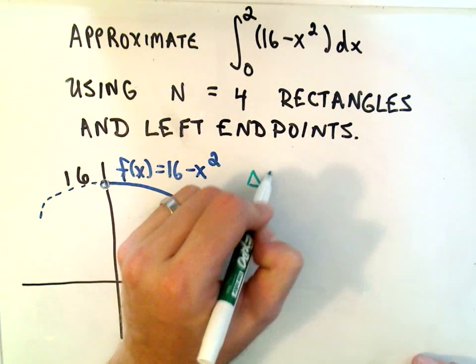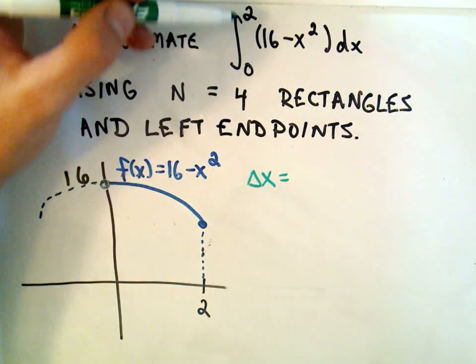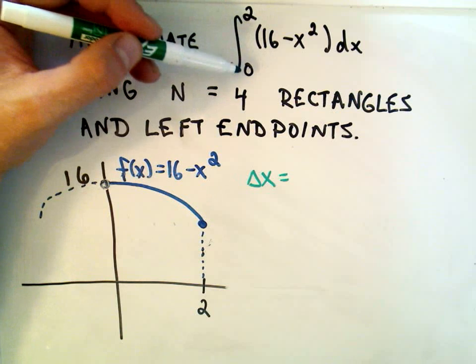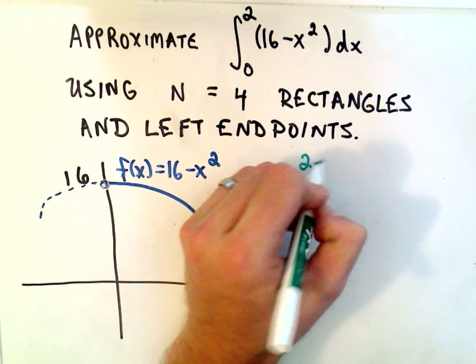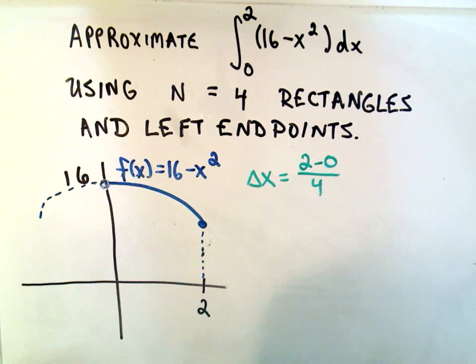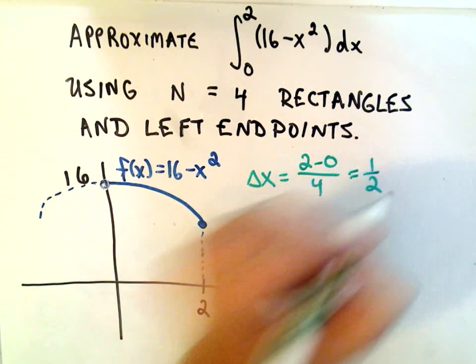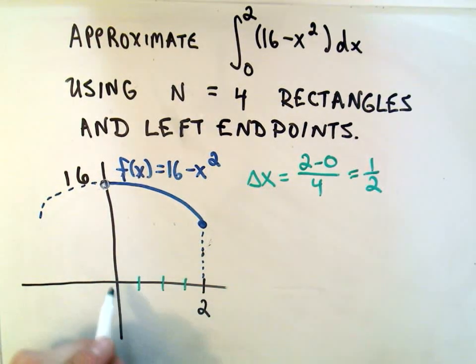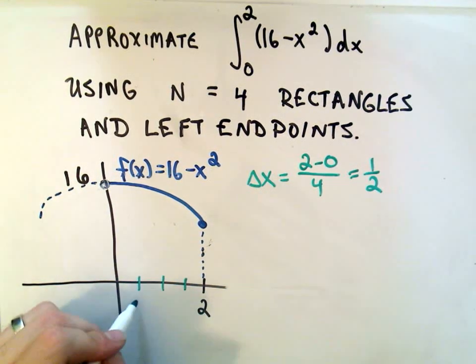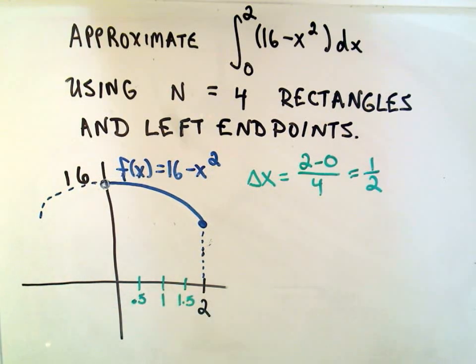We'll label the width to be delta x. Remember, that's b minus a over n, b being the upper limit of integration, a being the lower limit of integration, n being the number of rectangles you use. So we'll get 2 minus 0 over 4, which is 2 fourths or a half. So that means if we chop this up into four pieces, each interval has width one half. So the first point will be 0.5, then 1, then I'll have 1.5, and then the x-coordinate of 2.